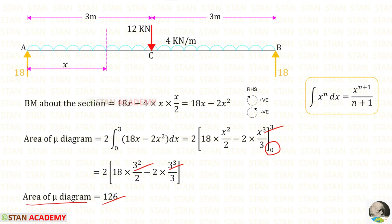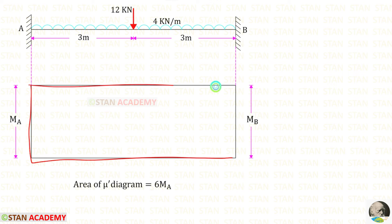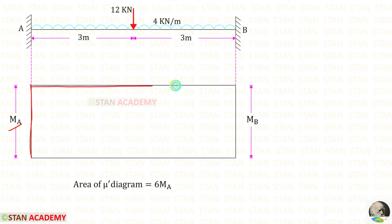Now let us draw the Mu-dash diagram. Since loading is symmetrical, the values of Ma and Mb will be the same, so the Mu-dash diagram will be a rectangle. The area of the Mu-dash diagram is the height Ma multiplied by the length 6, giving an area of 6·Ma.